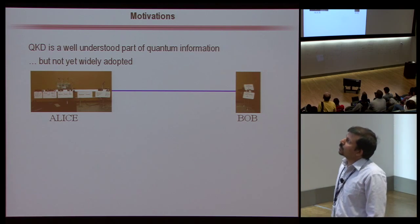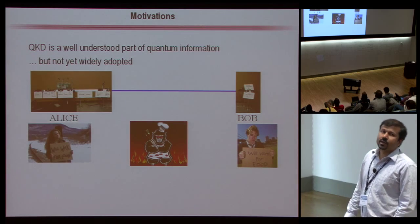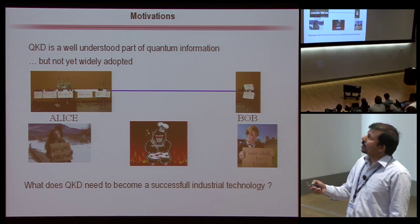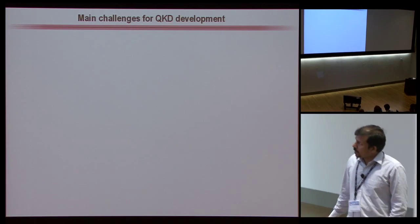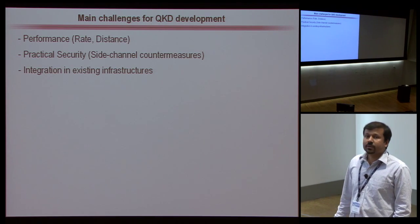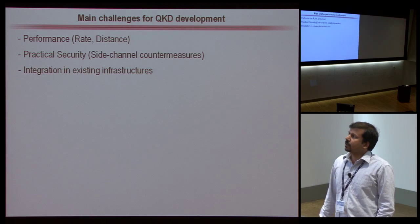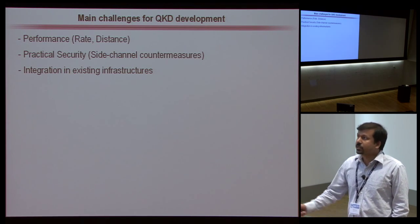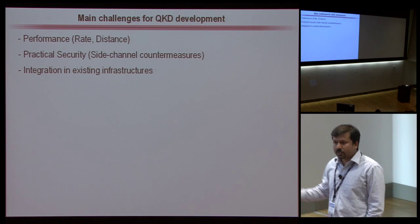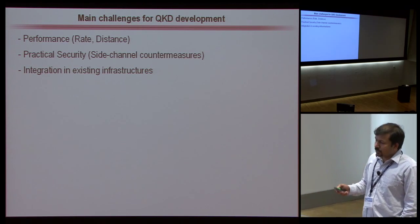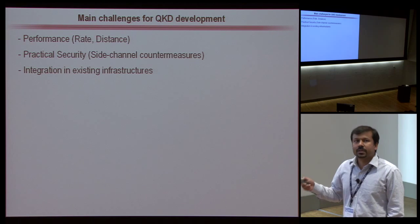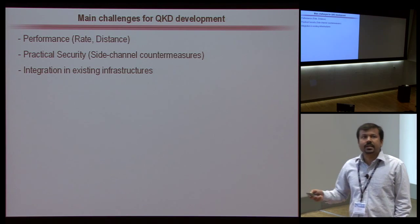QKD is a well-understood part of quantum information but it's not yet widely adopted. So what does QKD need to become a successful industrial technology? The main challenges are performance — of course the key rate and the distance — high key rate and longer distance. In terms of practical security, we have side-channel attacks and countermeasures to close such loopholes. And most importantly, we need to integrate QKD into existing classical network infrastructure.